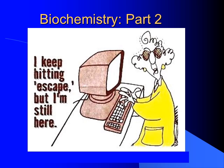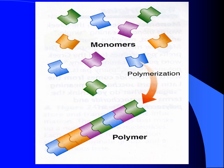Hi guys, it's Mr. Y. This is part two of our biochemistry lecture, so if you haven't watched part one yet, make sure you go back and do that, then come back here and finish up with part two. Just a very brief review before we go on: remember, monomers are the individual links, polymers are the entire chain, and the monomers go together to make the chains.